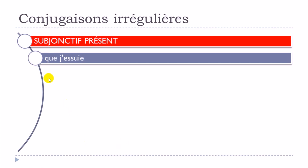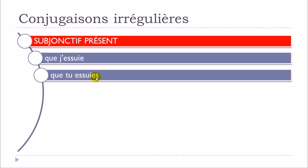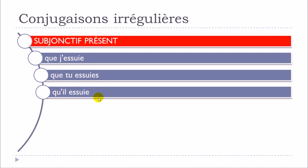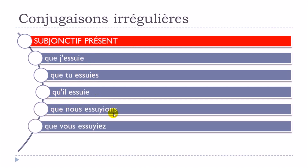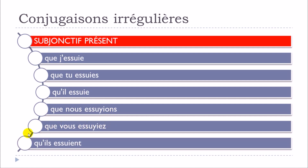Finally, let's see le subjonctif présent. Que j'essuie, que tu essuies, qu'il essuie, que nous essuions, que vous essuyez, qu'ils essuient. Exactly as we had for the indicatif présent, Y is changed and replaced by I for je, tu, il, and the same for ils at the plural form. The endings stay the same and don't change at all.